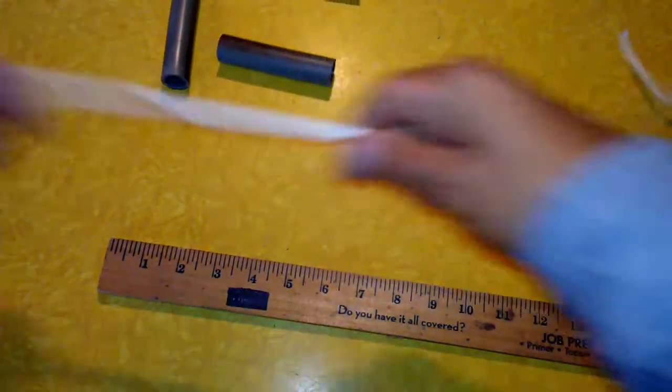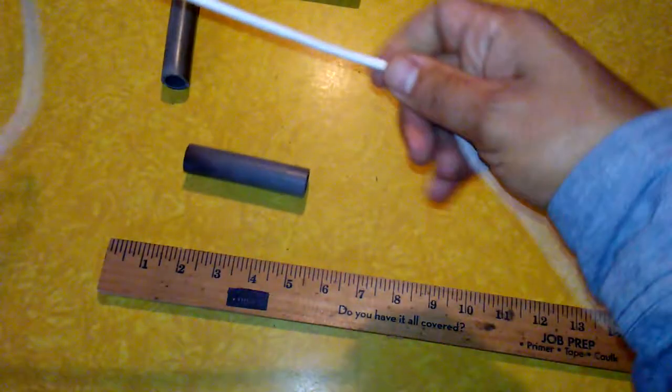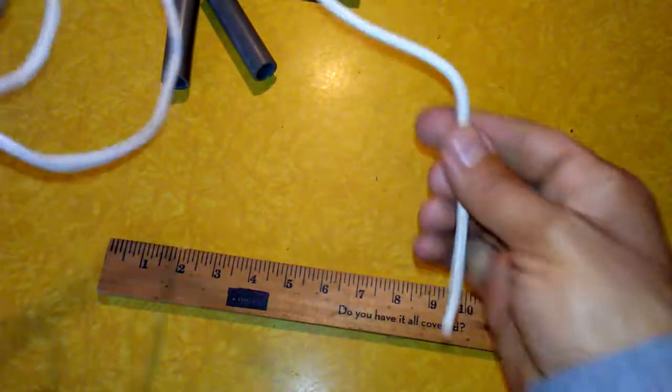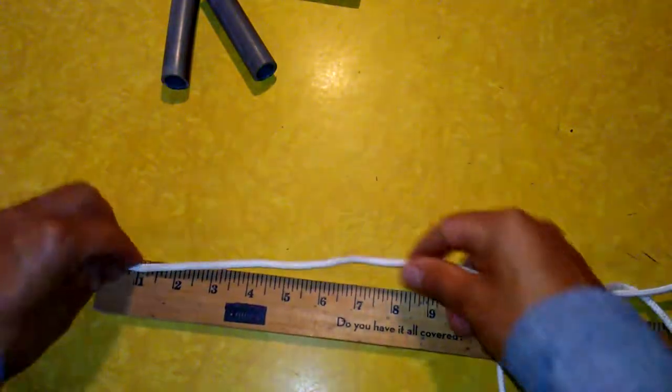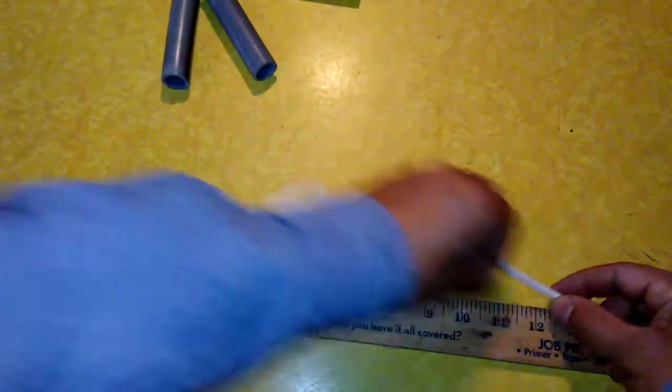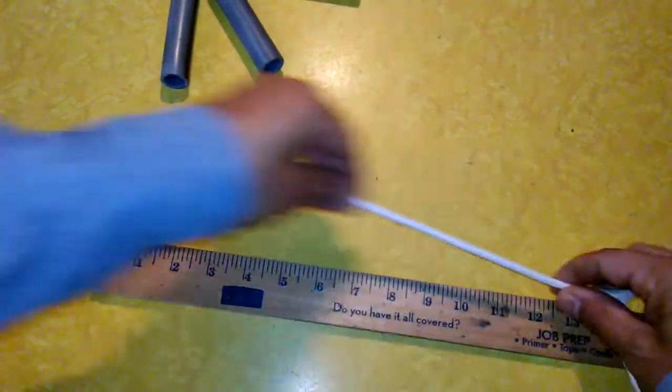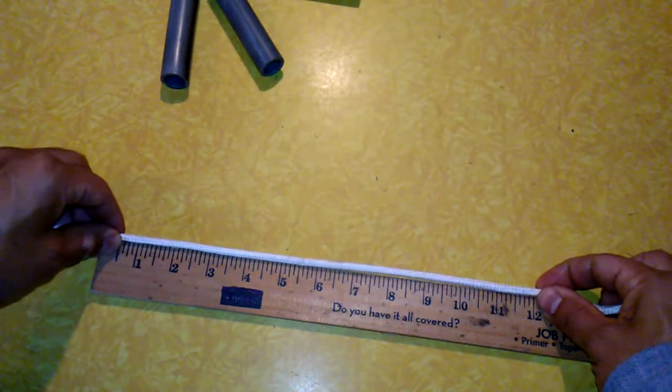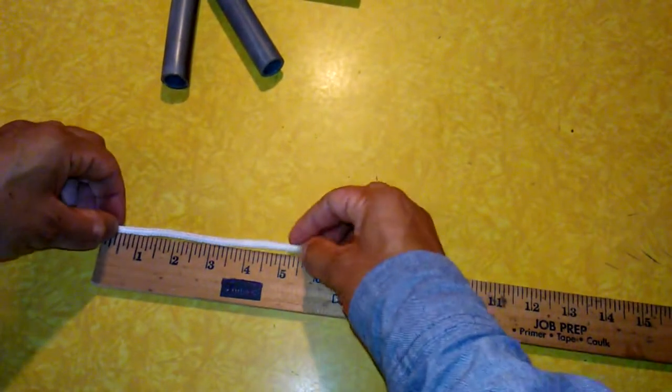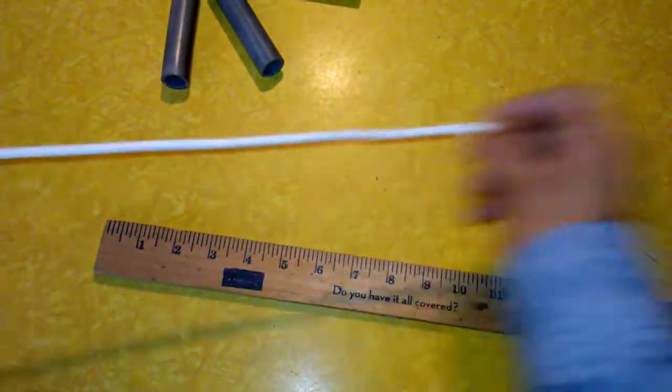We're also going to need some rope. I have this clothesline rope. You could use any type of rope. And this one we got about, there's one foot, two feet, three feet, four feet, about four and a half feet of this.